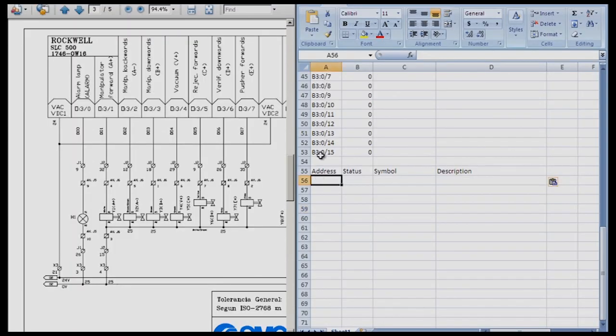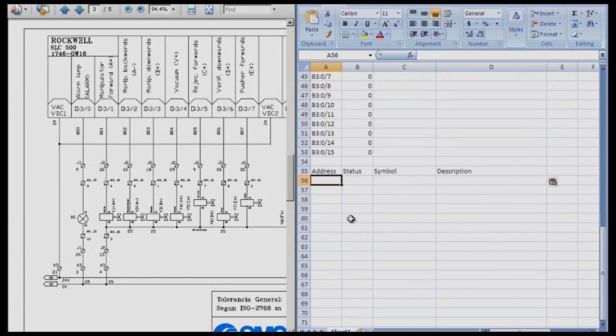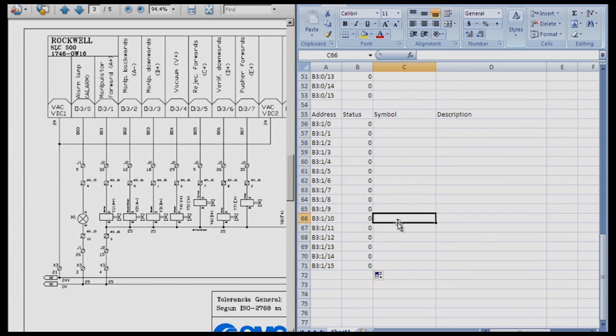So again, now I used B3 colon zero in the previous addressing of our cylinder positions. So now I'm going to use B3 colon one because it's the next available word in the series. So B3 colon one slash zero and I hit enter. And yes, you guessed it, again I'm going to auto fill because it eliminates errors. And then I can get 15 bits of information that I plan to use. Status again, we're just going to do a zero and we're going to auto fill that.